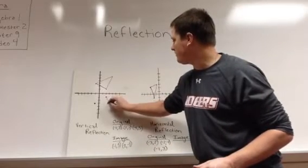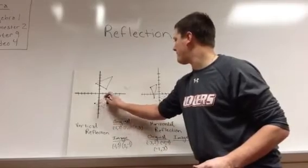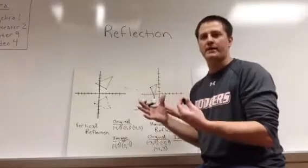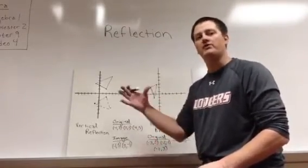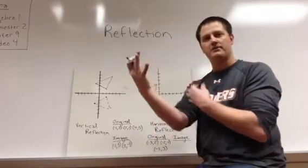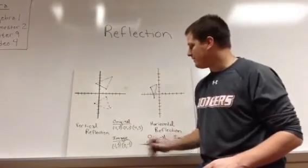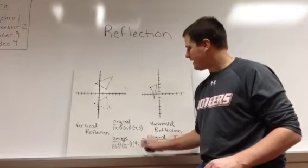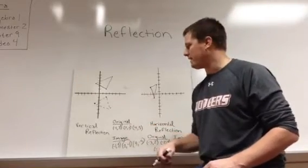We connect our dots. And we have the exact same triangle, just pointing a different direction because it's been reflected. Think about when you look in the mirror and you raise your right hand. In the mirror, it's going to look like your left hand is actually being raised because it's the exact opposite. Here, our opposites are just at the bottom. And as we can look at our points, everything stays the same except for the y values. The y values became the opposite.